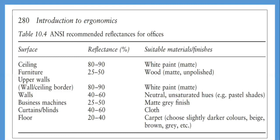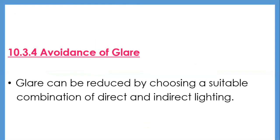In a well-illuminated office, all large objects and major surfaces should have a similar luminance, with a contrast ratio of no more than 3:1 for surfaces in the middle of the visual field. Contrasts at the sides of the visual field should be avoided. A balance of surface luminances is best achieved in practice by using materials with different reflectances in a room. Glare can be reduced by choosing a suitable combination of direct and indirect lighting.